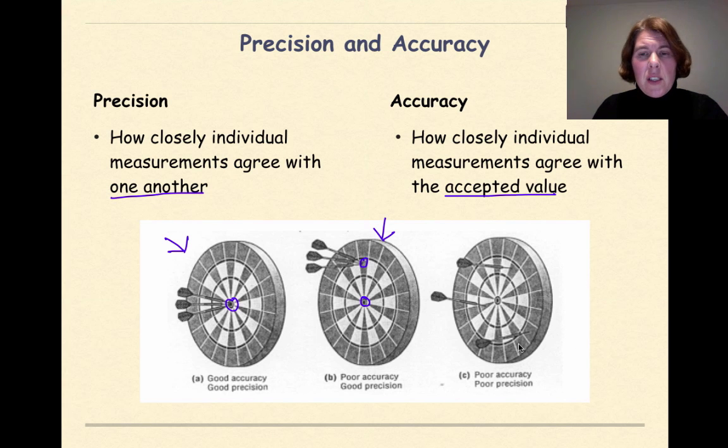And then this final example right here is showing poor accuracy, poor precision, and they probably need some more practice. The darts are all over the place on the dartboard, and they're not hitting the bullseye. In general, this summarizes the difference between precision and accuracy.